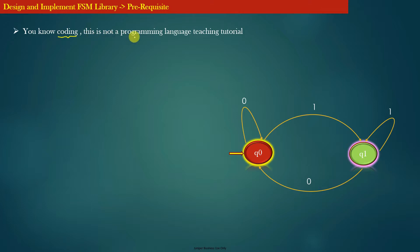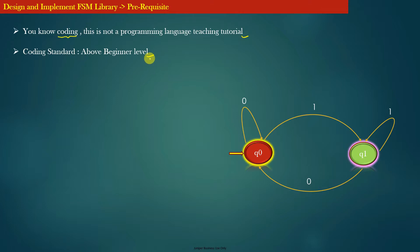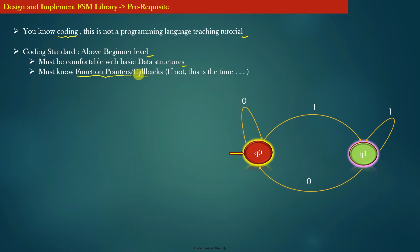Now let us understand the prerequisites of this course. This course assumes that you are good enough in coding — this is not a programming language teaching tutorial. Your coding level should be at least above beginner level. If you are still struggling with basic data structures such as linked lists and queues, you should spend more time learning those before enrolling in project-based courses. You must also be very comfortable with function pointers or callbacks. If you are not comfortable with function pointers or callbacks, this is the time to learn their actual application.